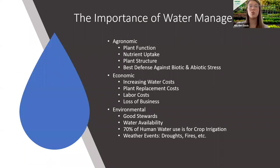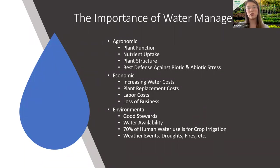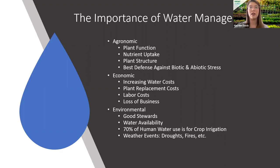Moving on to the importance of water management, we broke it down into three sections: agronomic, economic, and environmental. On an agronomic scale, that comes into growing — plant function, nutrient uptake, everything to get the best-looking, healthy plants.